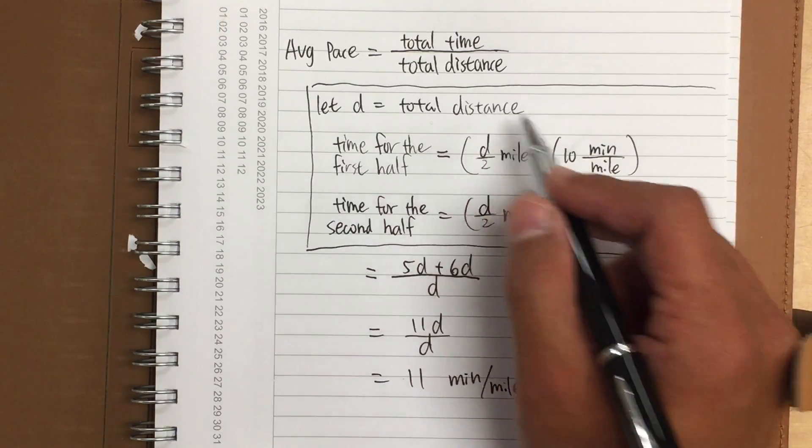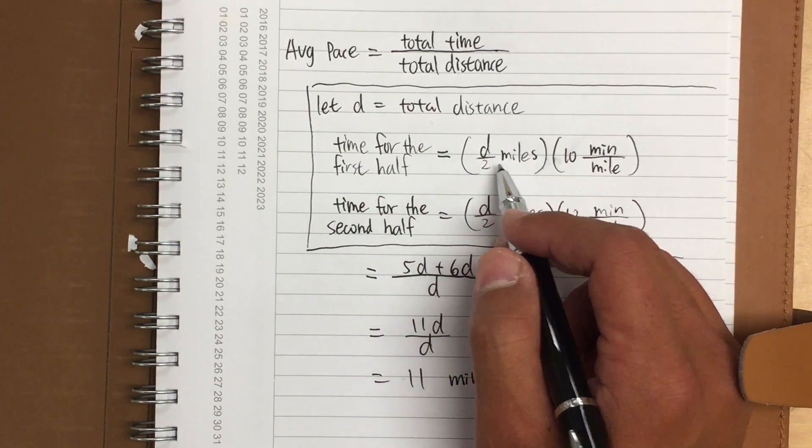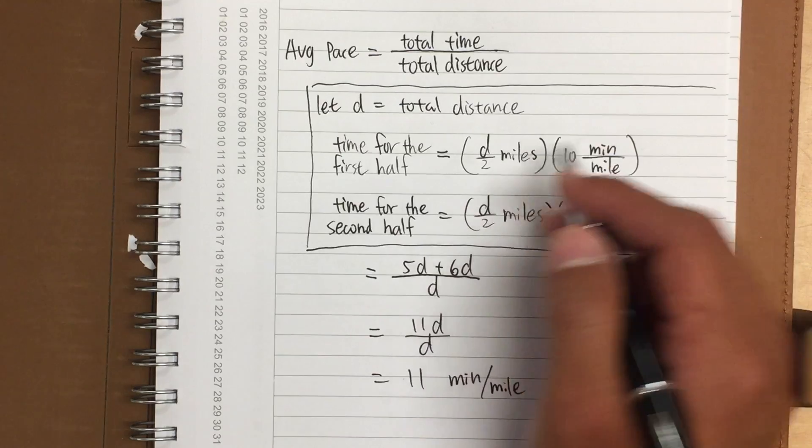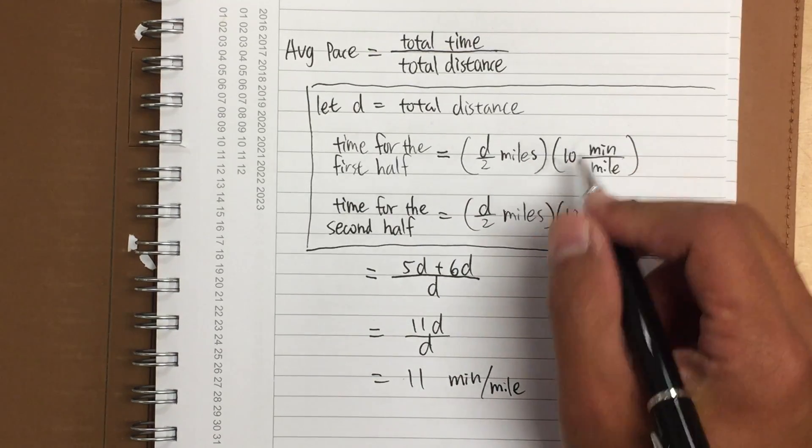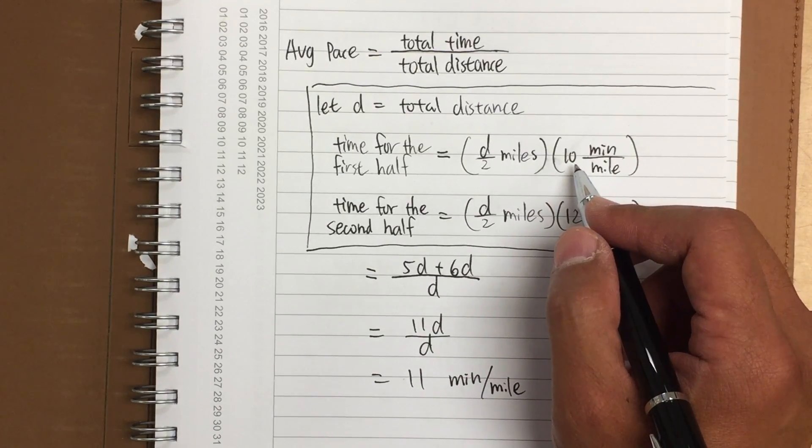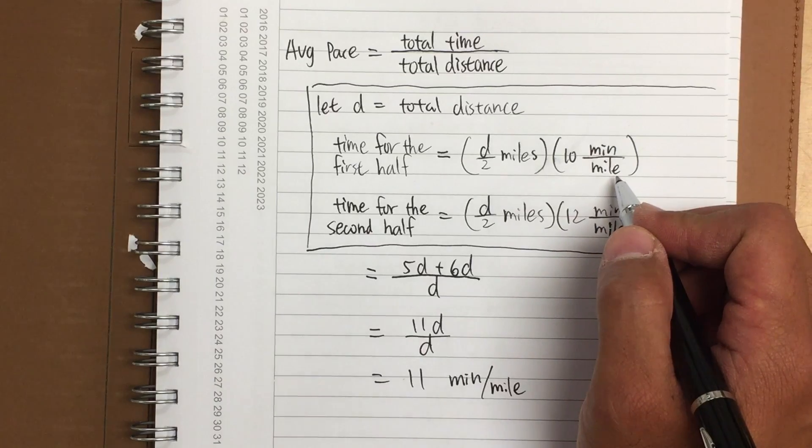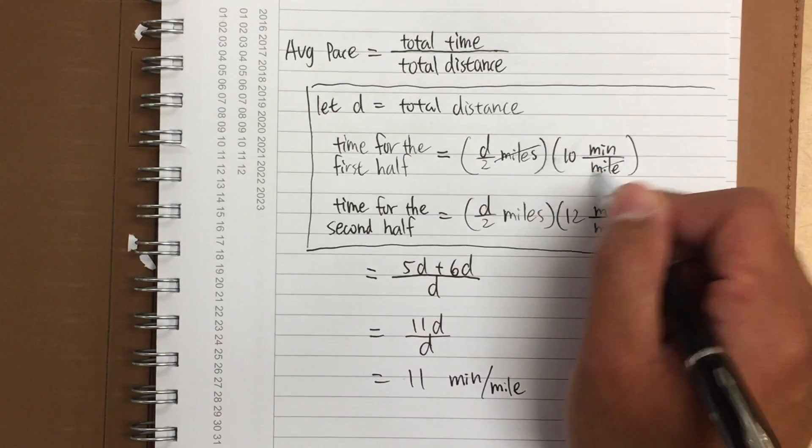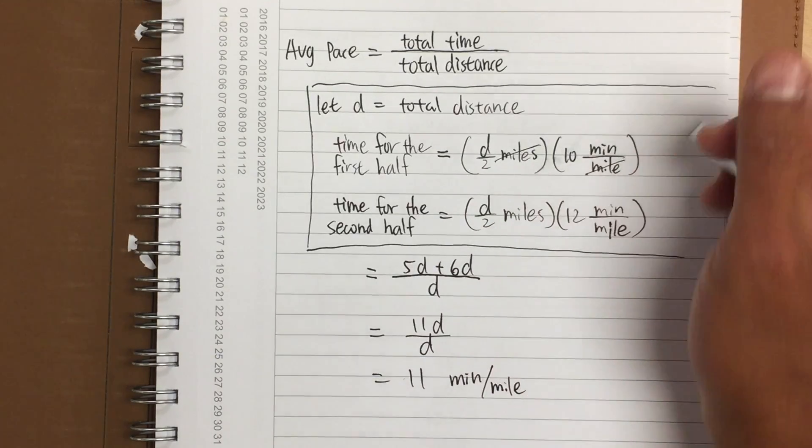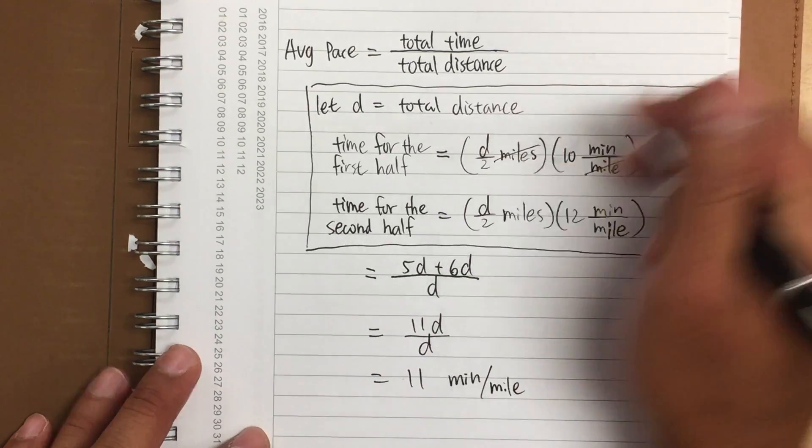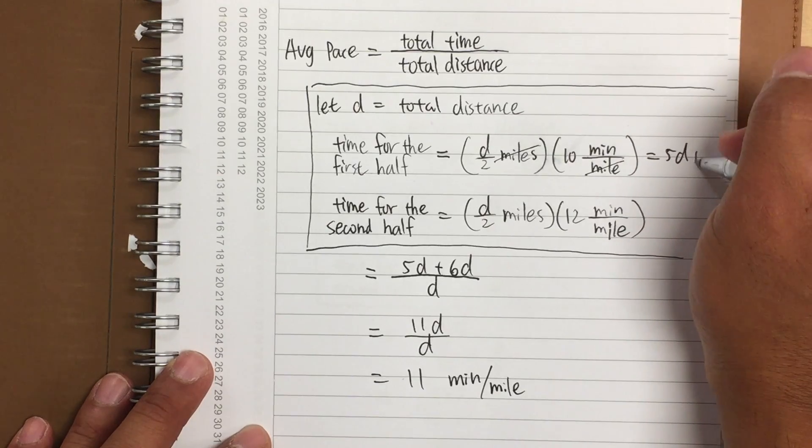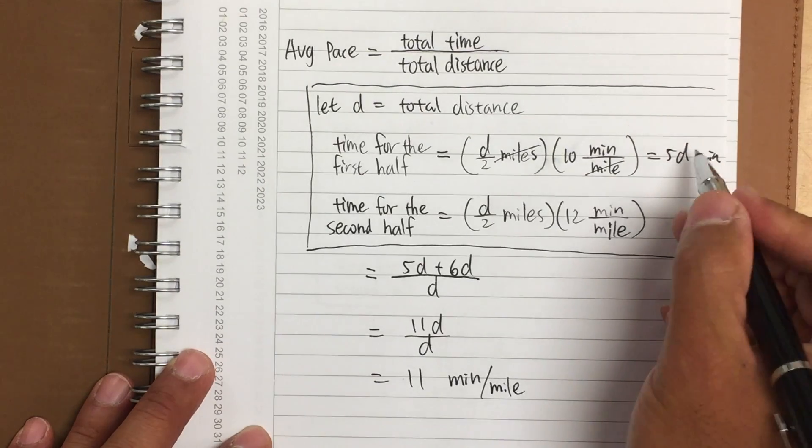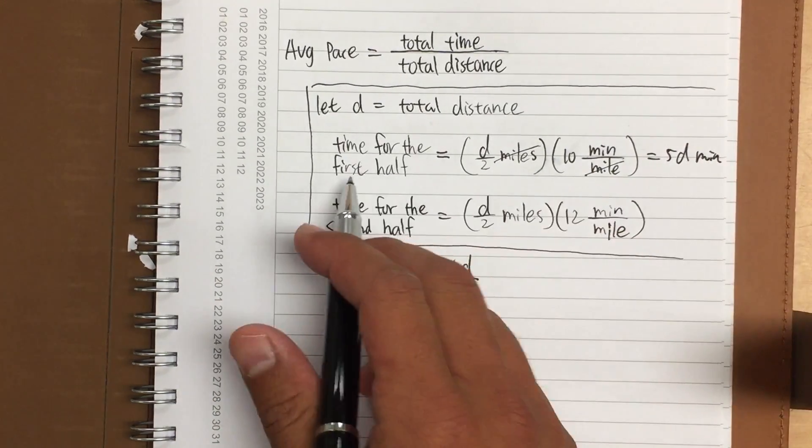Anyway, since this is the total distance, well, d over 2 will be for the first half, right? And you see, the pace, as I told you guys in the video, it was 10 minutes per mile. And if you look at this time times that, the mile will cancel each other out. d over 2 times 10, it's just going to be 5d minutes. So this is the amount of time that I need for the first half.